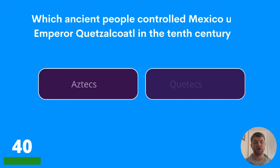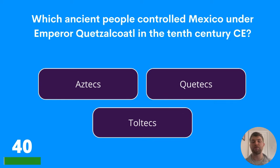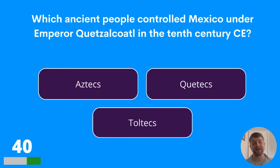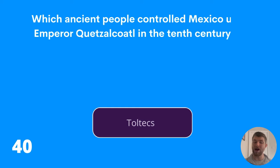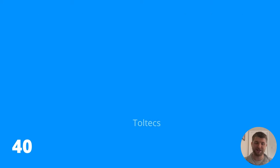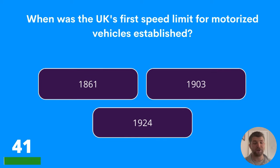Question forty: which ancient people controlled Mexico under Emperor Quetzalcoatl in the 10th century CE? The answer choices are Aztecs, Quetzalcoatl, or Toltecs. The answer is the Toltecs.